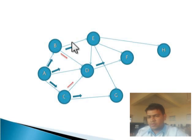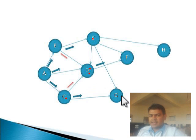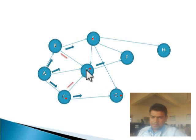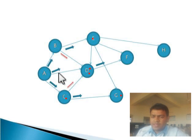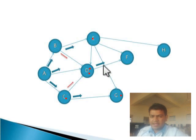Now we can see the work of flooding further. B resends the package to its neighbors E, D, and C. D and C also send the package to their neighbors. However, D has already received the package sent by A, so the packages from B and C are considered duplicates. D can accept them as duplications. This is an example of duplication.